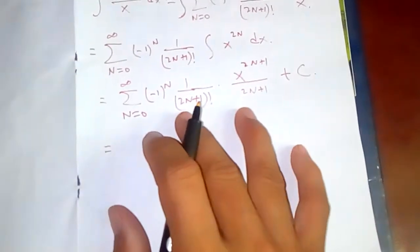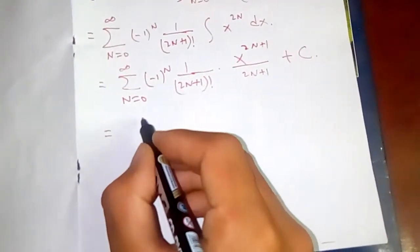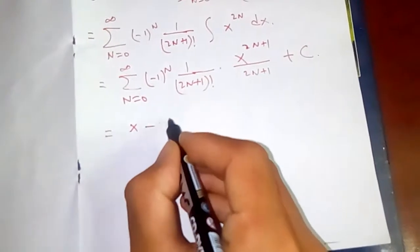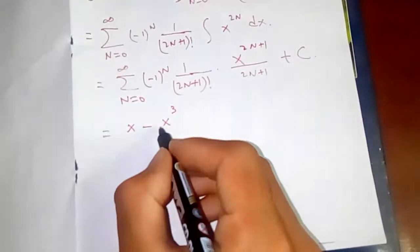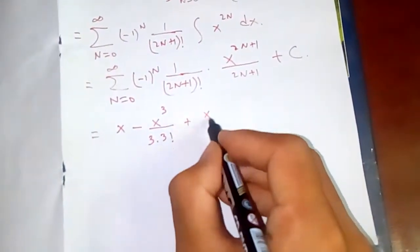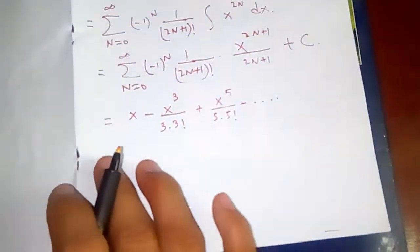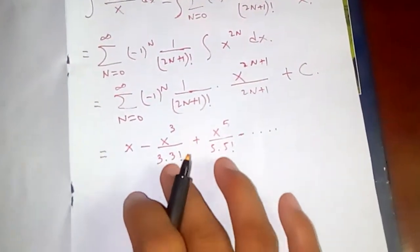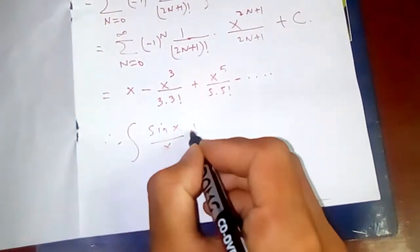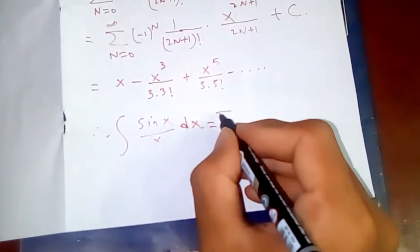Now let's expand it. What do we get? What kind of series we can get here? This is x minus x^3 by (3 times 3 factorial) plus x^5 by (5 times 5 factorial) minus and so on. So this integral turns out to be this one.